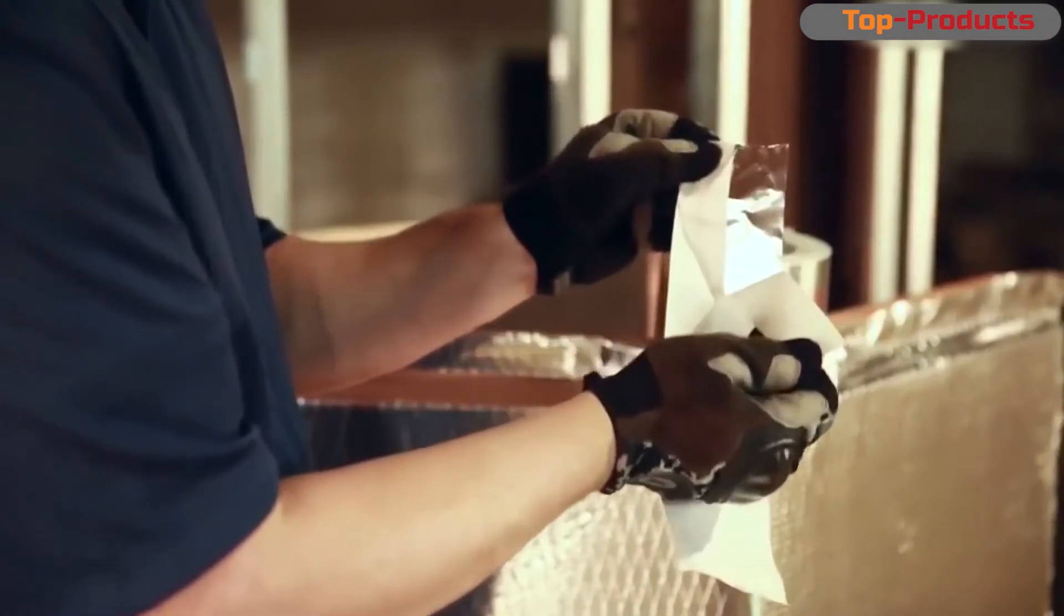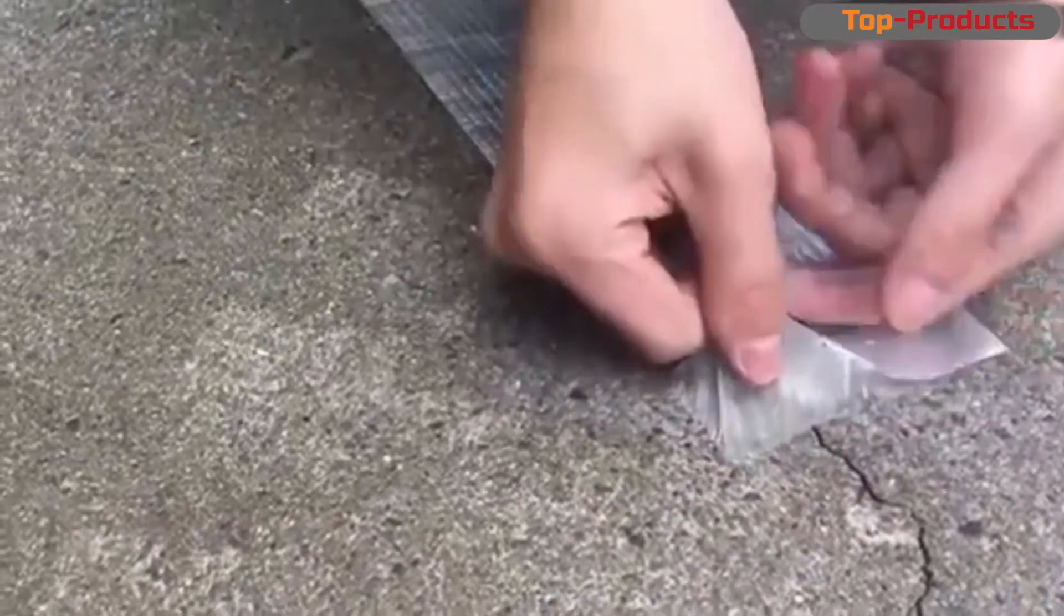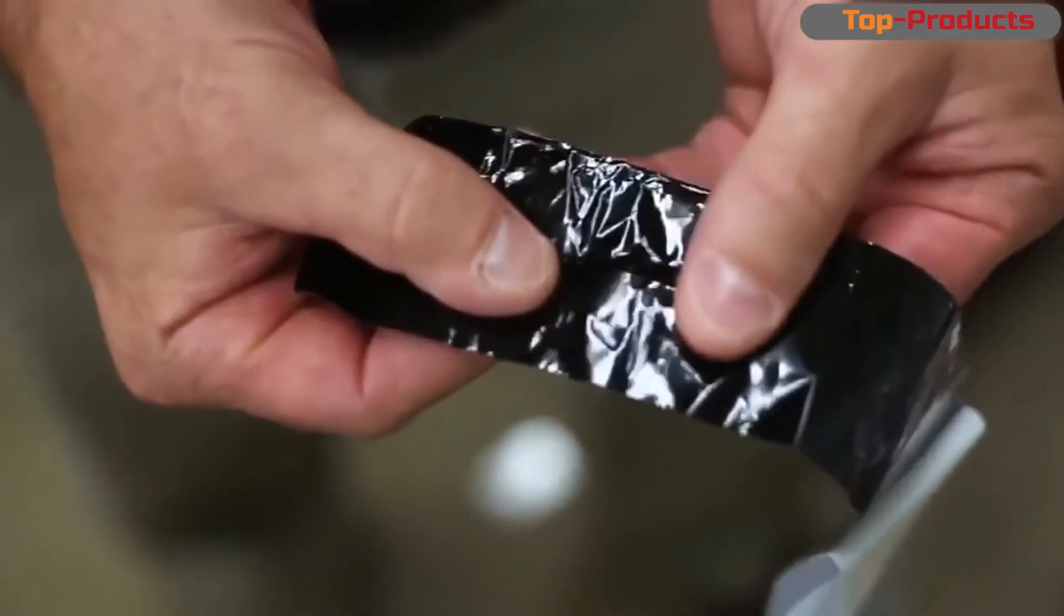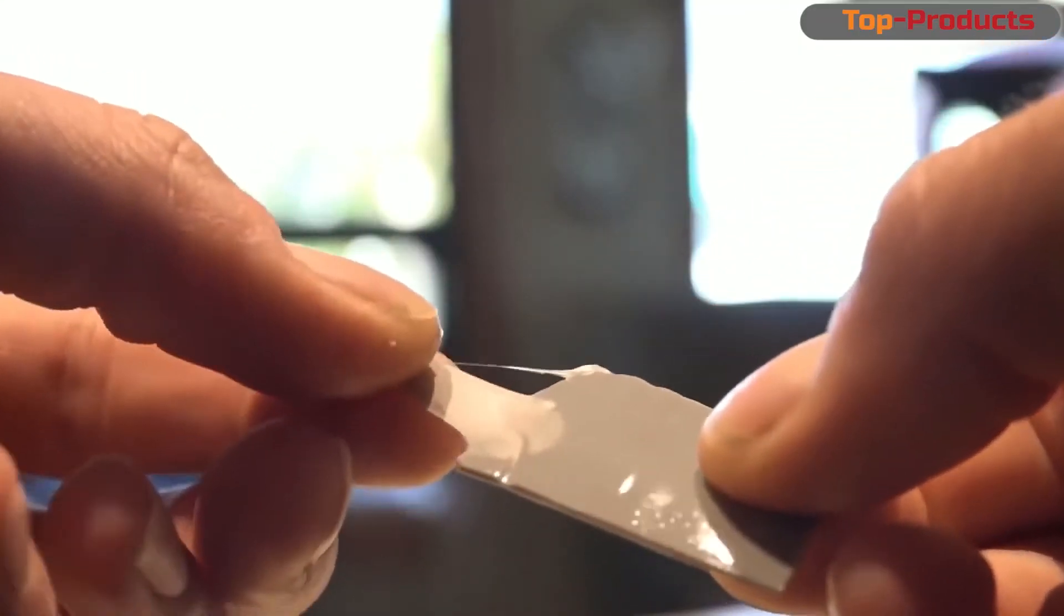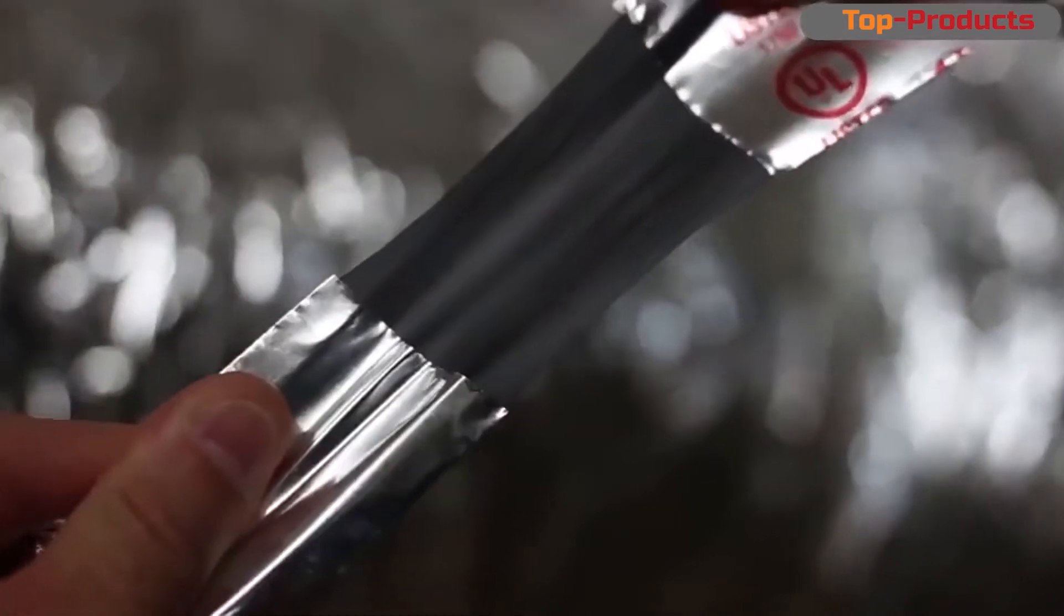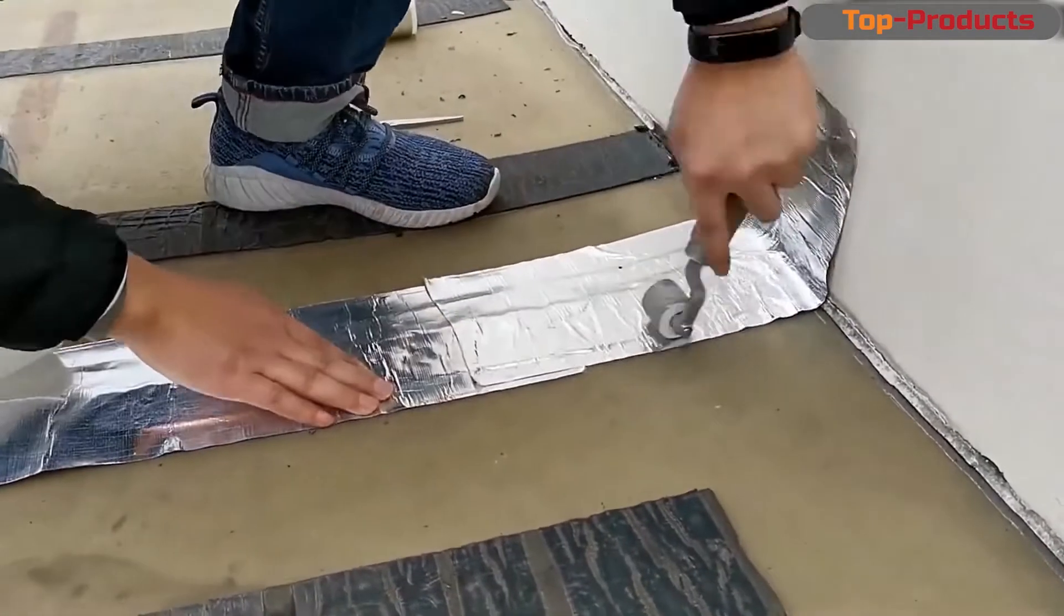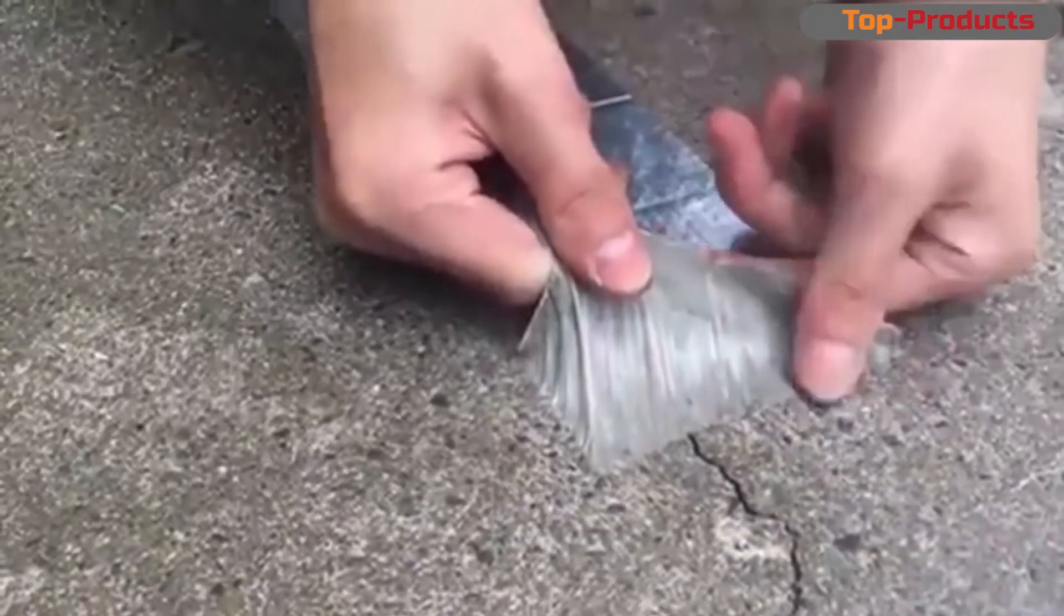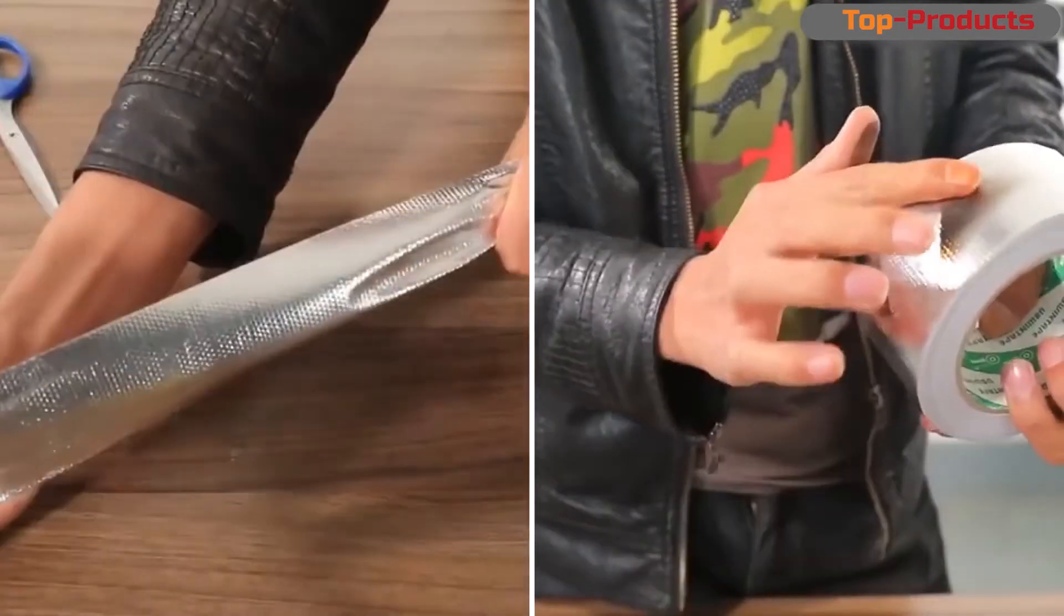This tape is real help and a liquidator of domestic emergency situations. We tested it on all possible surfaces. Sticks securely, does not fall off, does not soften from high temperatures. If you straighten it right away, it does not go in waves and is not going to fold. There are no special operating conditions, you just need to degrease the surface, and if there are bumps, then wipe them. It is necessary to stick carefully so that air does not get under the tape. That's all wisdom.